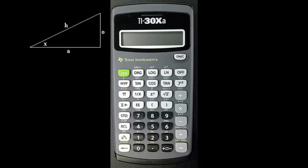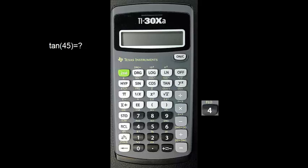The tangent function finds the ratio of side O to side A. To calculate the tangent for the angle 45 degrees, for example, enter 4, 5, and press the tangent button. The screen should display the answer 1.